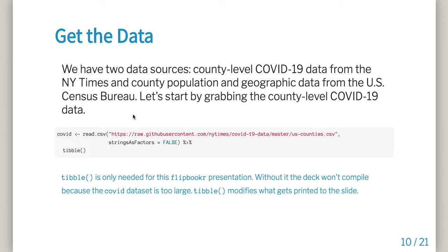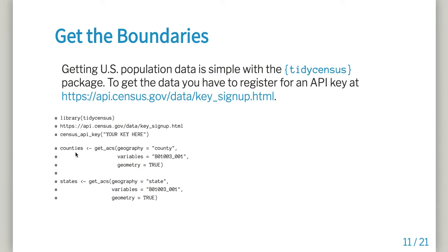We're going to use two data sources today: county-level data from the New York Times repository, and county-level population and geographic data from the U.S. Census Bureau. We can grab the COVID data first using read_csv, passing the URL of the NYT GitHub repository CSV file, and that creates a dataset called COVID. The Tibble call here is just for formatting in the slide deck — it's the reason everything failed for me last week — but don't worry too much about that piece. This gets us the health data we need for this week.